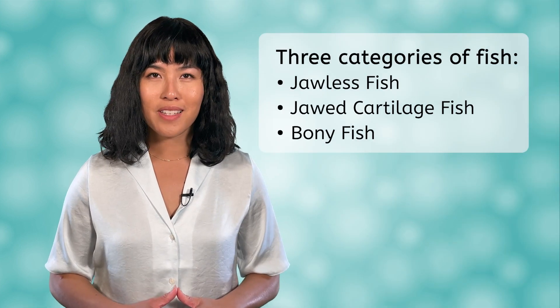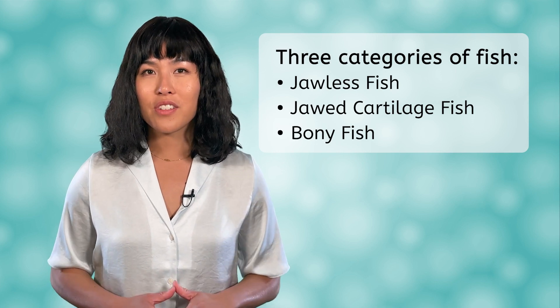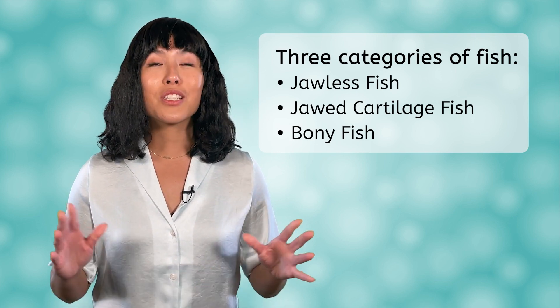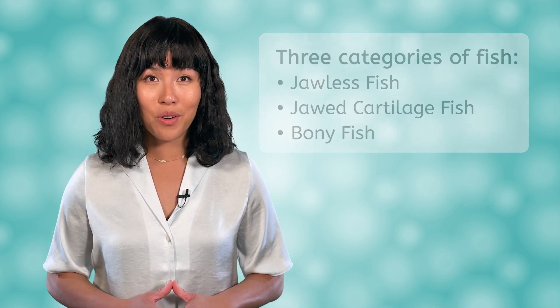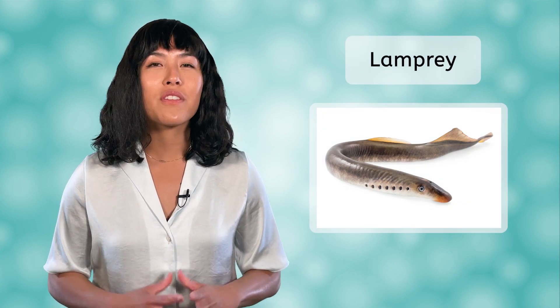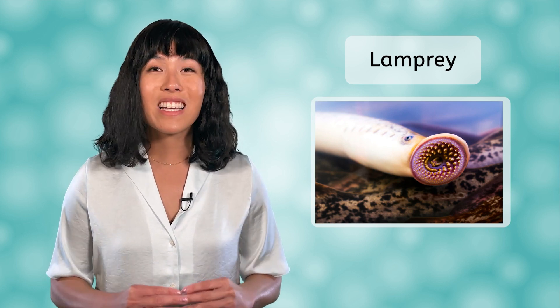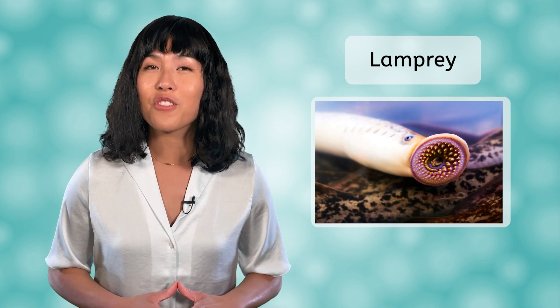All fish fit into one of three categories: jawless fish, jawed cartilage fish, and bony fish. Jawless fish are the oldest known vertebrates. There are only two species in this category, lampreys and hagfish. These fish have a simple anatomy of a sucker-like mouth with rows of teeth, a long eel-like body, no fins, and skin made of cartilage.